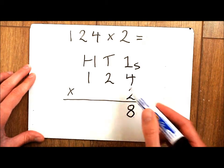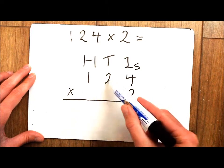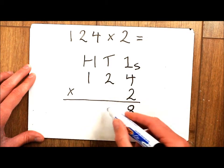Then I have to multiply my ones by my tens. So 2 lots of 2 or really it is 2 lots of 20. So 2 lots of 20 is 40.